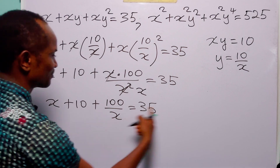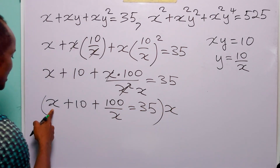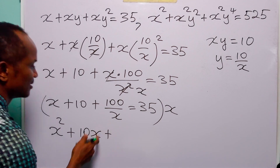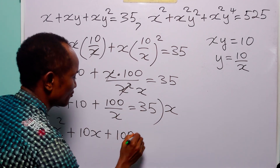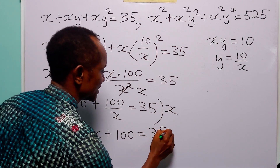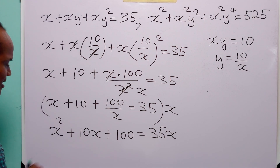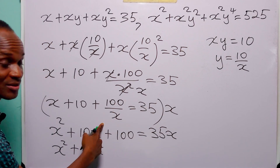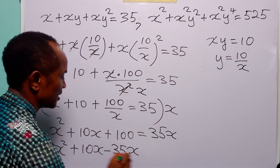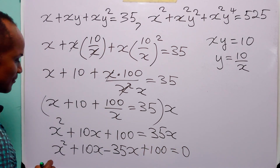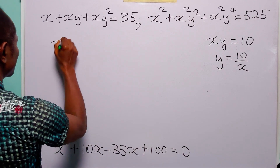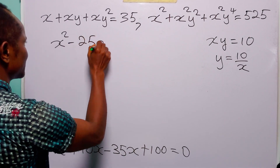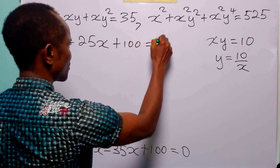To get rid of this fraction, we multiply through the equation by x. x times x is x squared, 10 times x is 10x, 100 over x times x is 100, and this equals 35 times x, which is 35x. Rearranging this equation, we have x squared plus 10x minus 35x plus 100 equals 0, which gives x squared minus 25x plus 100 equals 0.